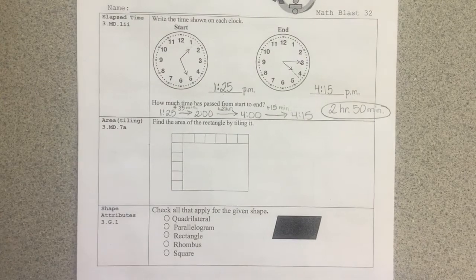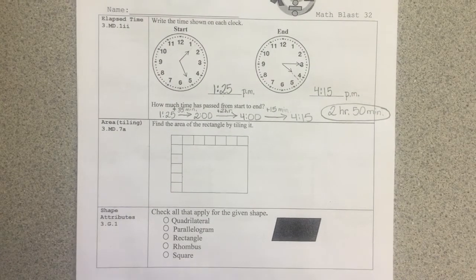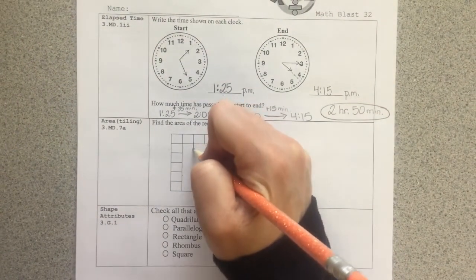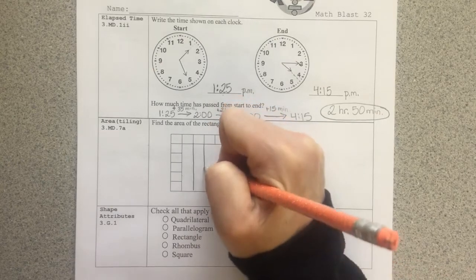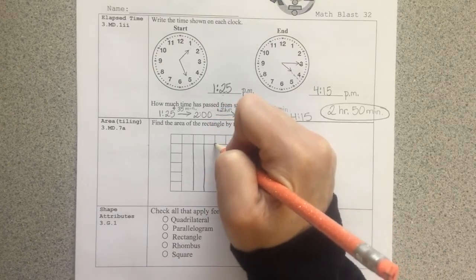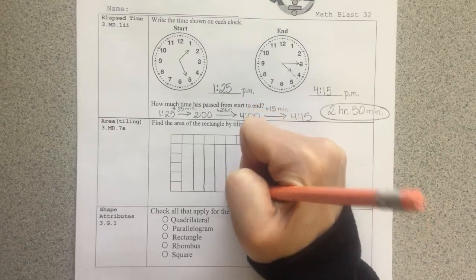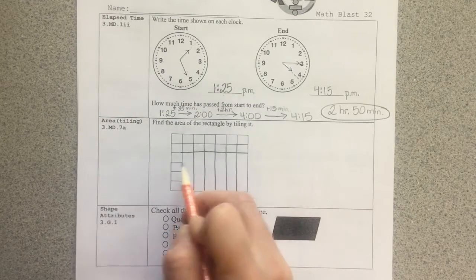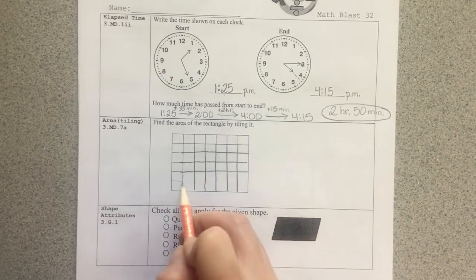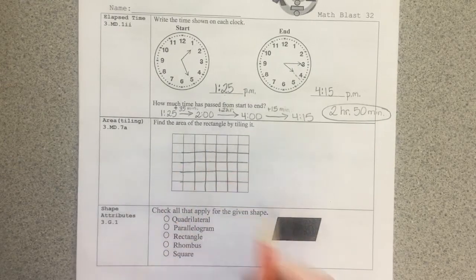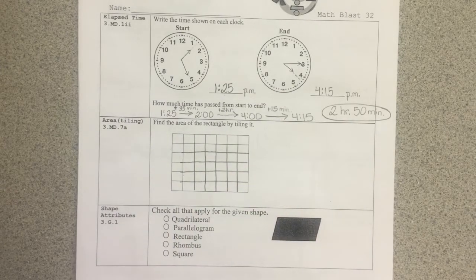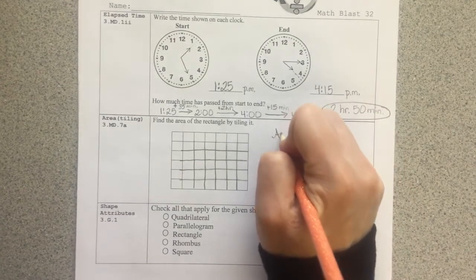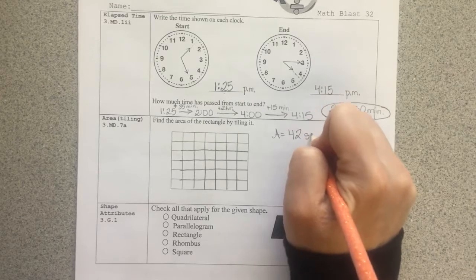Area tiling. Find the area of the rectangle by tiling it. To tile the rectangle, we are simply going to finish putting the square units inside of that large rectangle. So I'll finish drawing the columns. And now I'm going to continue to draw the rows over. And I can count all of my squares. And I will find that inside of that large rectangle, there is a total of 42 squares. So the area is equal to 42 square units.